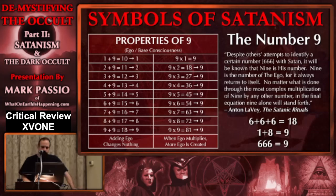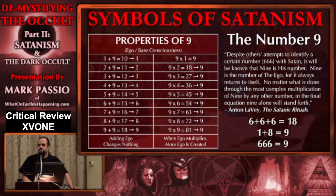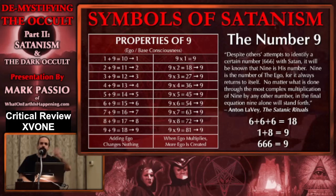Now let's look at the multiplication of the number nine. Nine times one is nine. Nine times two is 18; one plus eight is nine. Nine times three is 27; two plus seven is nine. Nine times four is 36; three plus six is nine. Nine times five is 45; four plus five is nine. No matter how complex the numbers get — nine times anything — you add the digits, it's nine. Symbolically, when ego — nine — is multiplied by anything, it comes right back to itself. More ego is created, and there's no change. You started with nine, you end up with nine.